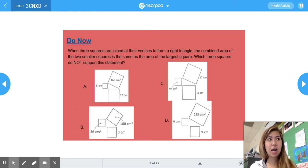Welcome to today's math lesson on similar figures and proving that they're proportional. Our do now reads, when three squares are joined at their vertices to form a right triangle, the combined area of the two smaller squares is the same as the area of the largest square.